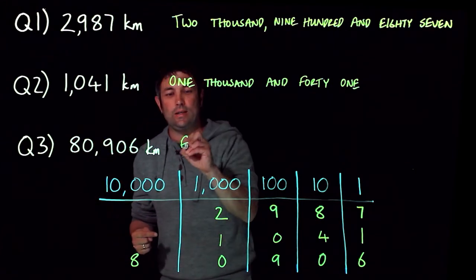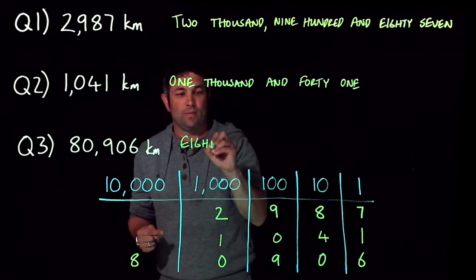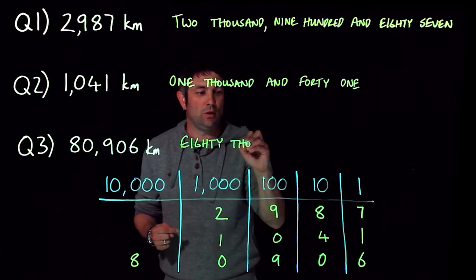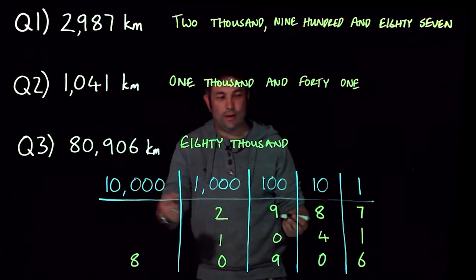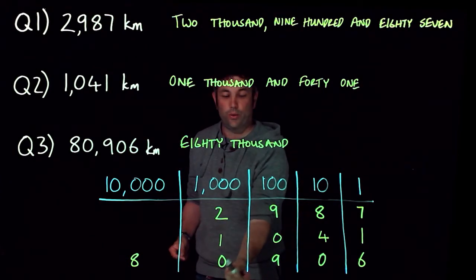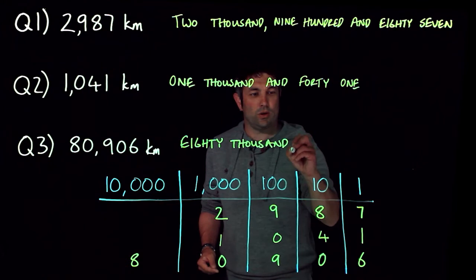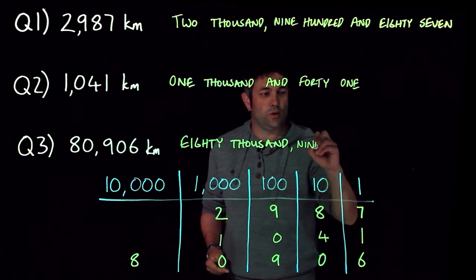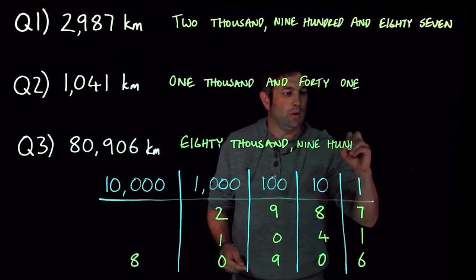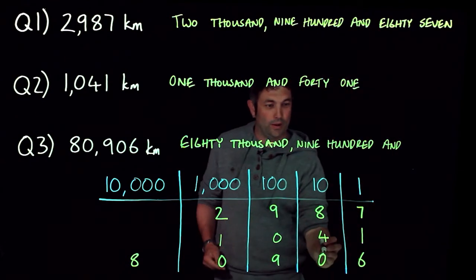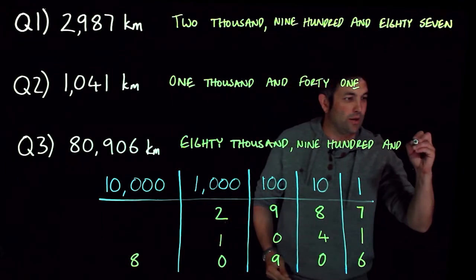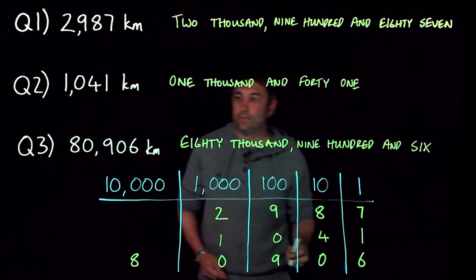We've got no thousands, we've got nine hundreds, so I'm going to put a comma, nine hundreds. Then we've got to put our 'and' in, and then there's no tens and six. There we go, done.